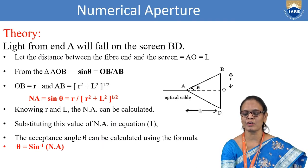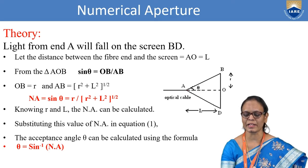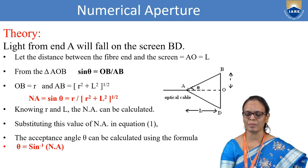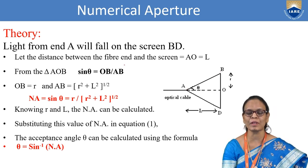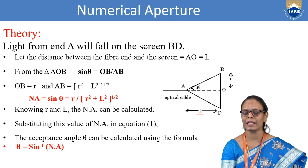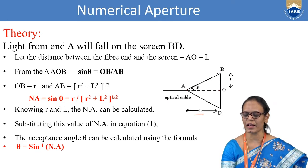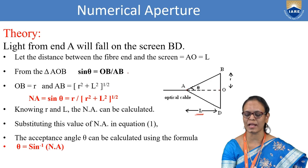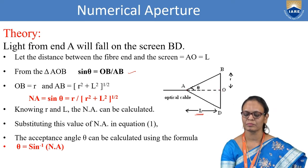Light from end A will fall on the screen BD. The light traveling through the optical cable exits at point A and is allowed to fall on screen BD. The distance between the output point A and the screen O is taken as capital L, i.e., AO = L. In the right-angle triangle AOB, sin(θ) = OB / AB, that is the opposite side upon the hypotenuse. We know AO = L, and OB is the radius R of the circle formed on the screen.